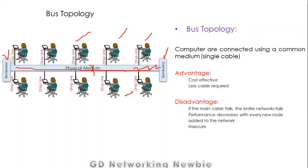A second disadvantage is that adding more and more nodes to the network decreases its performance. A third drawback is that bus topology is insecure — when data travels from one node, it is sent to all nodes connected with the medium. Only the intended recipient node will process the data while other nodes discard it, but since all nodes receive the data, the topology is considered insecure.